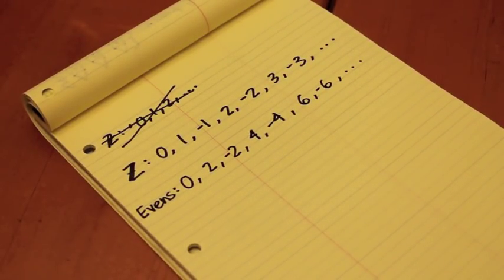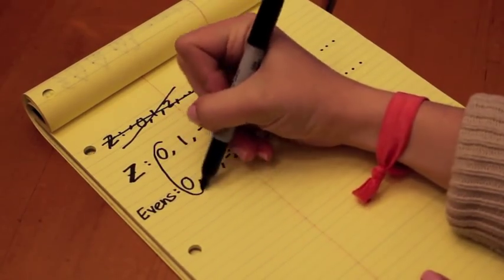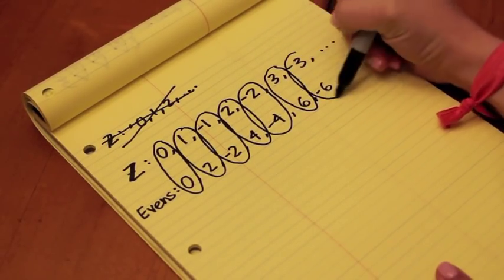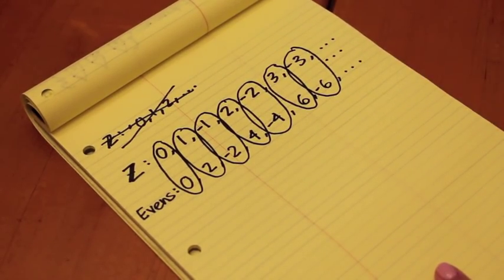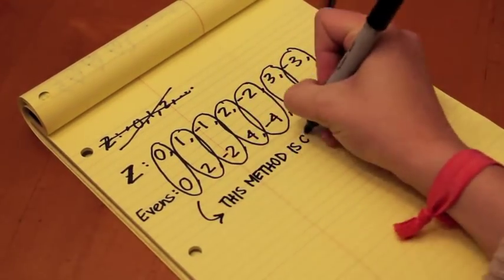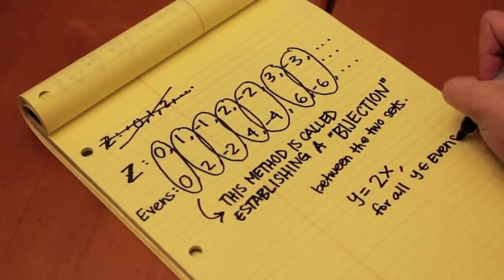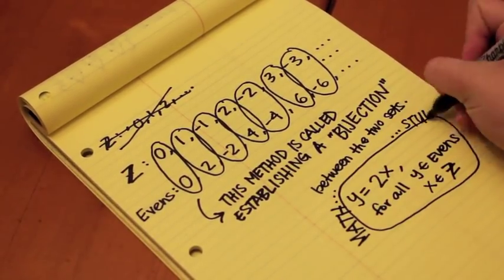Now let's try our second method from the houses and the people example and see if we can pair up our elements. And it turns out we can. We can continue pairing elements in this way forever and ever, and no set will ever run out of elements to pair with the other set. As an aside, this method is called establishing a bijection between the two sets. A bijection is the mathematical term for this pairing method.